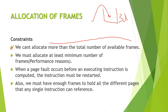The second constraint is that we must allocate at least a minimum number of frames. This means we must not waste our memory — there should be a minimum number of frames stored at a particular location. This constraint is entirely based on performance reasons.